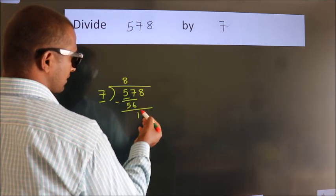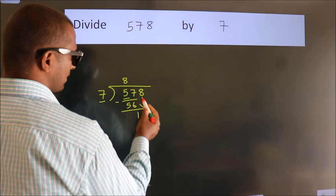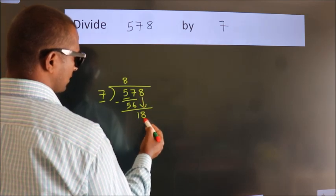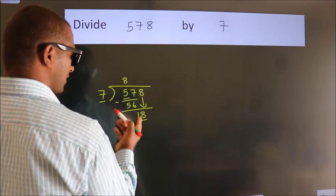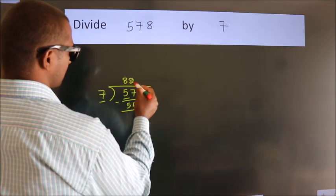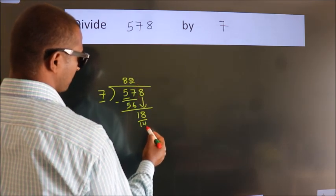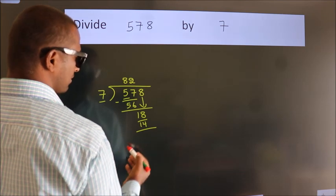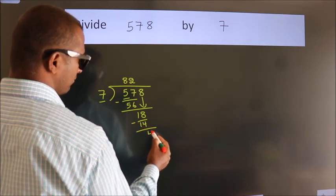After this, bring down the beside number, 8 down. So 18. A number close to 18 in the 7 table is 7 times 2, which is 14. Now we subtract and get 4.